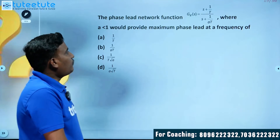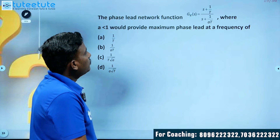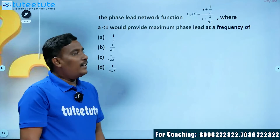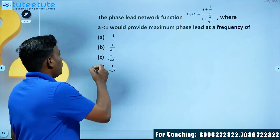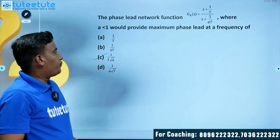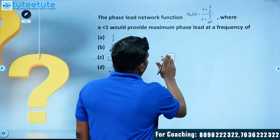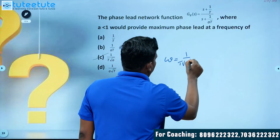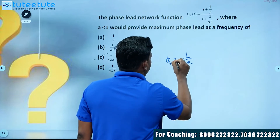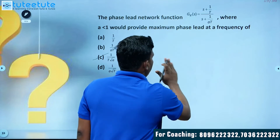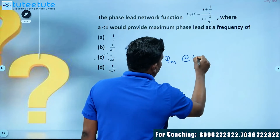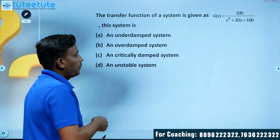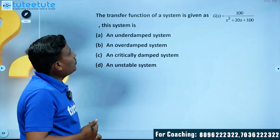Next question: the phase lead network is given where a < 1. At what frequency does it provide maximum phase lead? We already discussed this in phase lead compensation — the maximum phase lead occurs at frequency ω = 1 / (T√(2a)).